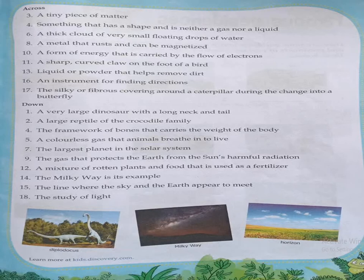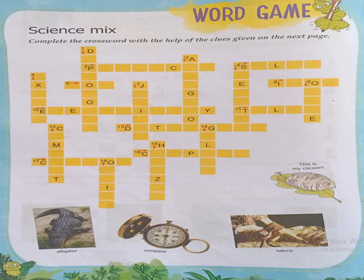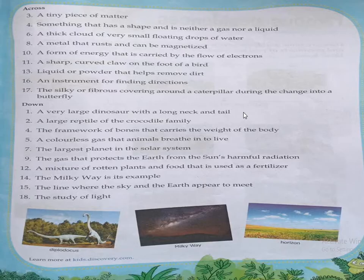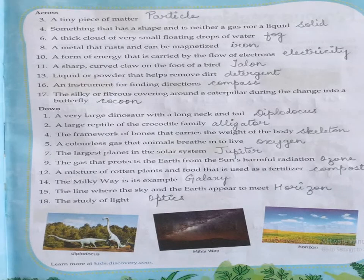The eleventh across clue is: a sharp curved claw on the foot of a bird. You can see in the crossword that it starts with T. So the name of that word is talon — T-A-L-O-N.